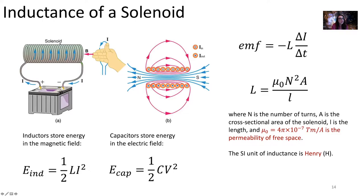Our solenoid is our coil of wire. If our EMF induced in the solenoid when the changing current runs through it is equal to minus L ΔI over ΔT, the inductance of the inductor is a quantity based on the geometrical properties of the inductor. For a solenoid, that is going to be equal to mu zero — the permeability of free space, four pi times 10 to the minus seven tesla meters per ampere — times the number of turns squared times the cross-sectional area divided by its length. That's how you calculate the inductance of an inductor if you know all of its geometrical properties.